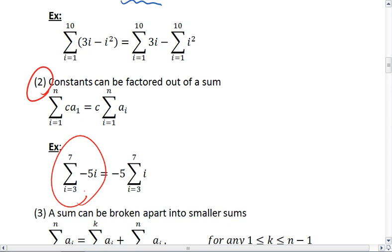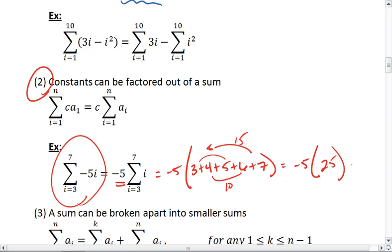For example, if I have the summation from i equals 3 to 7 of negative 5i, I can pull out that negative 5 and just figure out the summation from i equals 3 to 7 of i. That ends up being negative 5 times 3 plus 4 plus 5 plus 6 plus 7. So I get negative 5 times 25. So I get negative 125 as my answer.